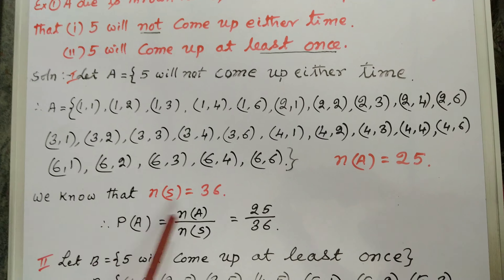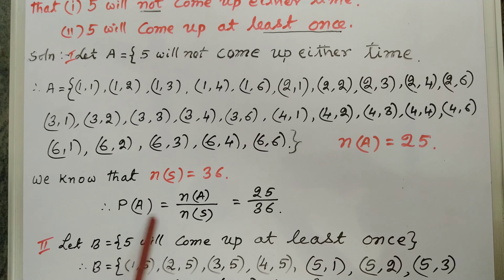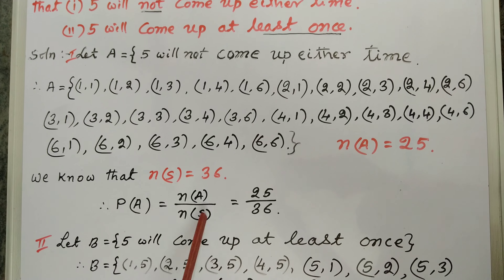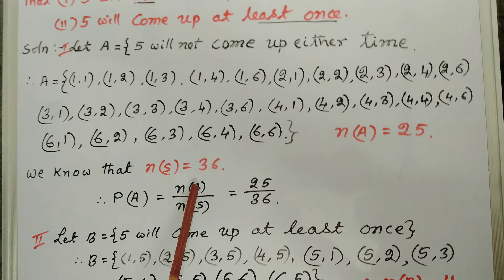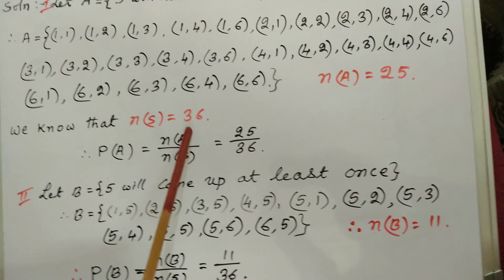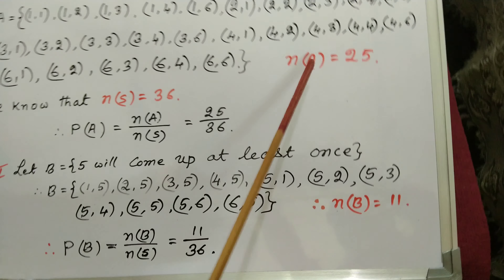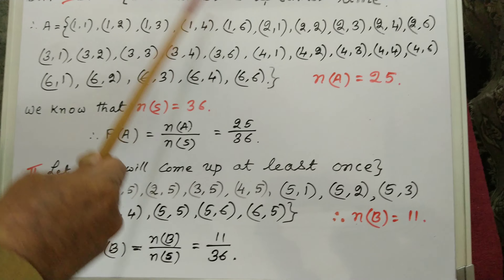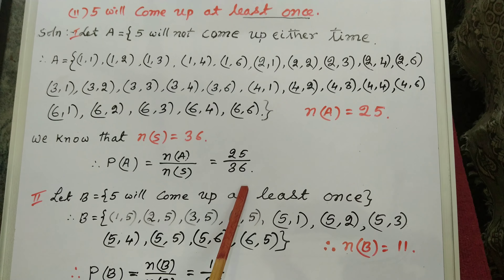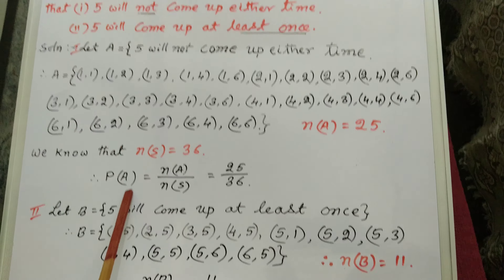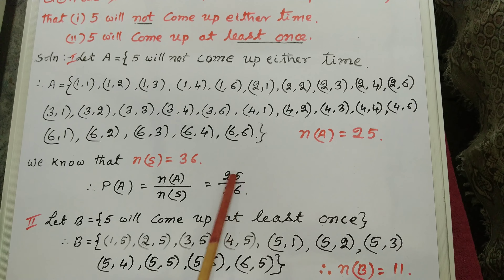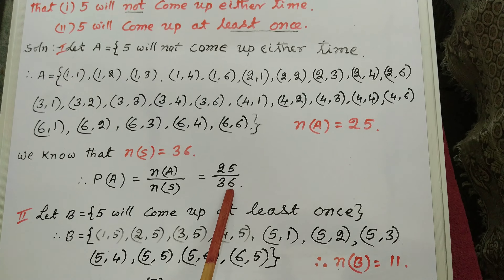We know that the formula: P(A) = n(A) divided by n(S). Favorable events is 25, and possible events n(S) = 36. Therefore, probability of the first event P(A) = 25 by 36.